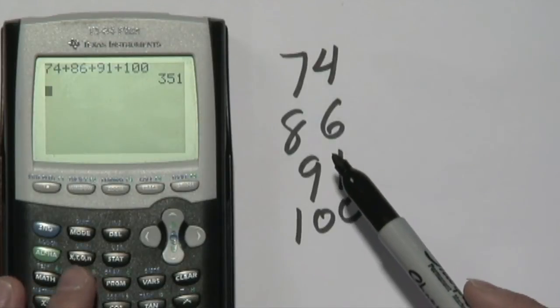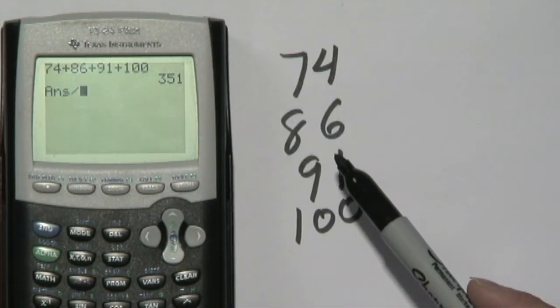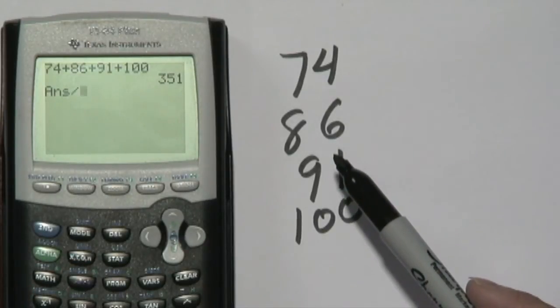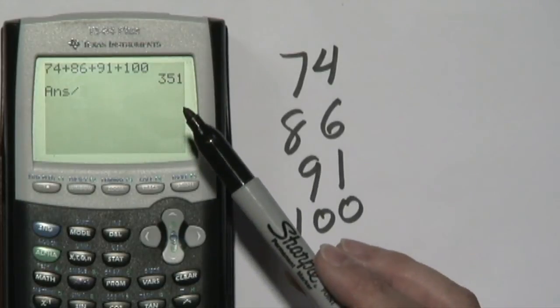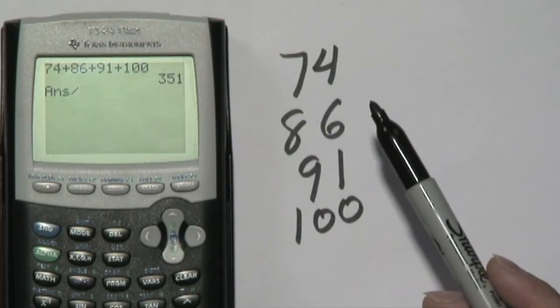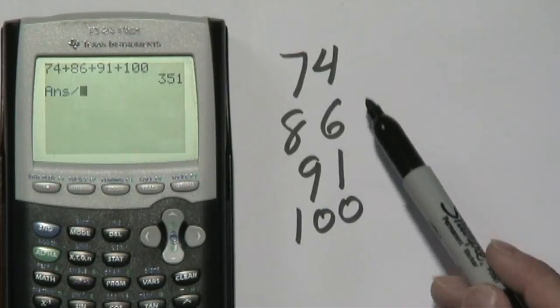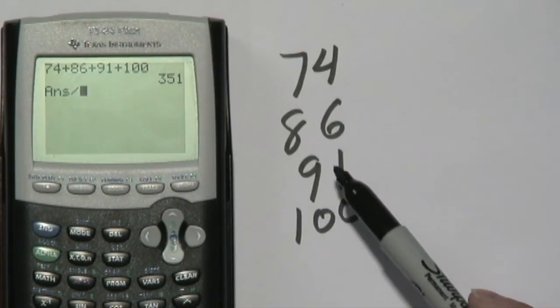Now to find the average or the mean, you want to divide. So the calculator will take 351 and divide by. Now here's the important part. How many numbers do you see here? 1, 2, 3, 4.